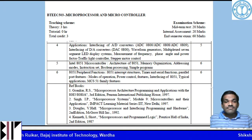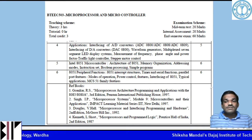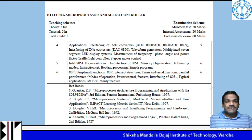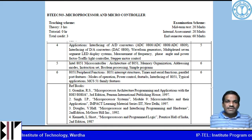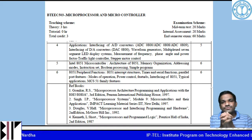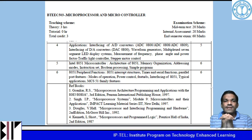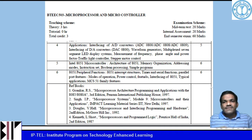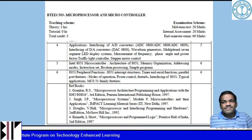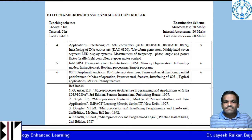The reference books for this course are: first, Microprocessor Architecture, Programming and Application authored by Ramesh Gaonkar; second, Microprocessor and Interfacing: Programming and Hardware authored by Douglas V. Hall; and for the microcontroller section we will use The 8051 Microcontroller and Embedded Systems authored by Mazidi, though this book is not listed in the official syllabus reference section.